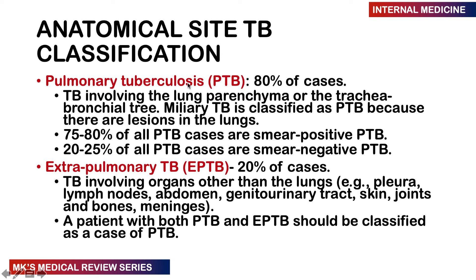TB can be classified anatomically. 80% of cases are pulmonary TB, affecting the lung parenchyma, tracheobronchial tree, or causing miliary TB. Of those, 75–80% are smear positive, meaning mycobacterium is isolated from the sputum. 20–25% are smear negative and generally do not transmit the infection. Extra-pulmonary TB accounts for 20% of cases and is much more common in the immunocompromised.